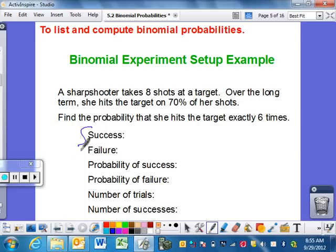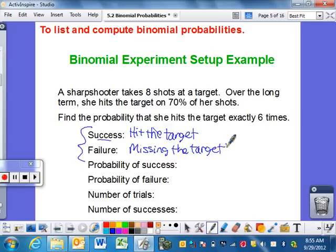So what you need to do is figure out, is this a success and a failure situation? It is. A sharpshooter is going to shoot at a target. What's deemed as a success? Well, it says that she hits it 70% of the time, so hitting the target is the success. The failure would then be, obviously, missing or failing to hit the target.